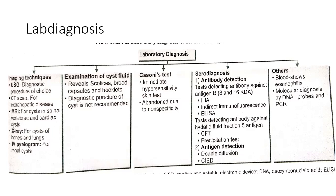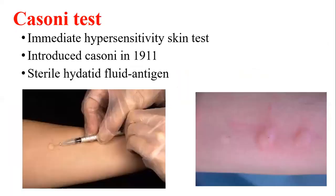Casoni's test is the immediate hypersensitivity skin test. Under serological diagnosis, antibody detection methods include IHA (indirect hemagglutination), ELISA, CFT, and precipitation tests. Antigen detection uses double diffusion counter immunoelectrophoresis (CIED). Other tests include blood examination showing eosinophilia, and molecular diagnosis by DNA probes and PCR technique.